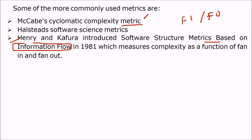With respect to the internal structure, cyclomatic complexity is based on the number of control paths; Halstead is based on the number of operators and operands; and Henry-Kafura is based on fan-in and fan-out.